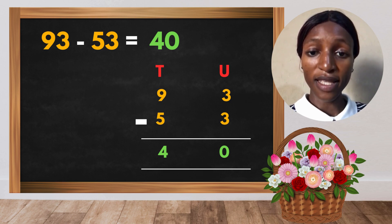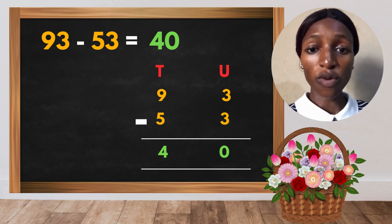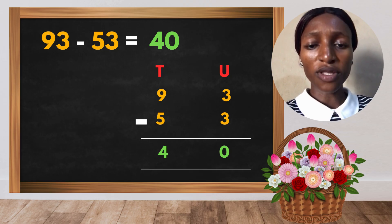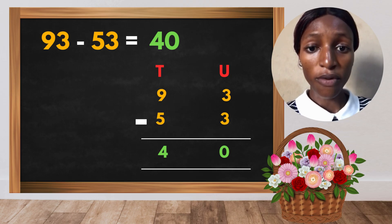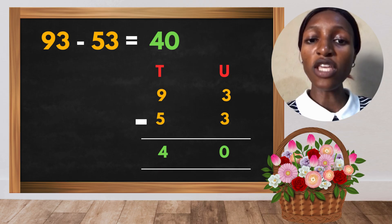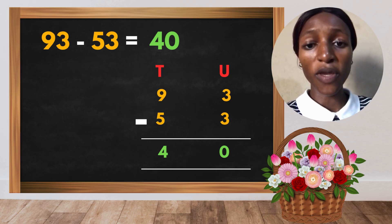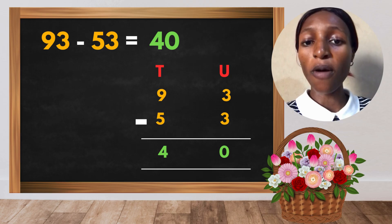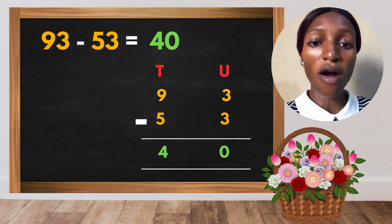So you start calculating from units, which is the lower part. Start from the back. So when you count 3 and you take away 3, what will be your answer? 0, that's correct. And when you count 9 and you take away 5, what will be your answer? That's 4, perfect. So 93 minus 53 gives you 40.